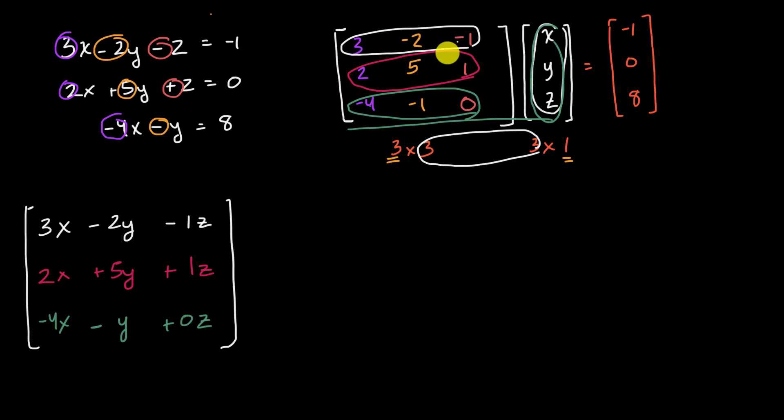And we know from this matrix equation that we have set up, that the left-hand side, this product, needs to be equal to what we have on the right-hand side. It needs to be equal to negative one, zero, and eight, which means, and I think things might be connecting for you now, that this needs to be equal to that, and that this needs to be equal to that. And last but not least, negative four X minus Y plus zero Z needs to be equal to eight, which is exactly what that original system of equations was telling us.